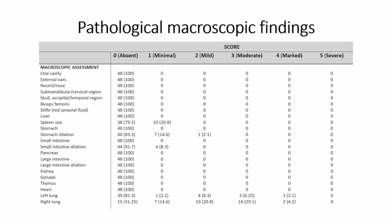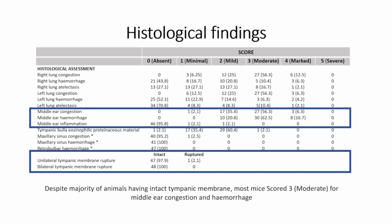In terms of our pathology findings, for most areas scored we found a score of zero, representing an absence of congestion and hemorrhage. However, we do see some congestion and hemorrhage in the lungs, where most animals scored between a 2 and a 3 — mild to moderate damage — which is actually less than animals killed via CO2. Our histology results also showed congestion and hemorrhage in both the right and left lungs, again less pronounced than with carbon dioxide killing. However, we also found congestion and hemorrhage in the middle ear, where most animals scored moderately — a score of 3 — when undergoing decompression.